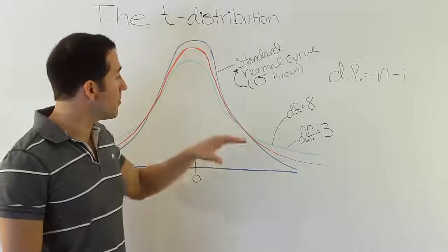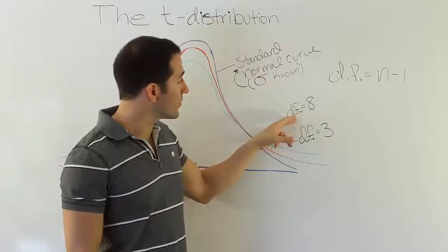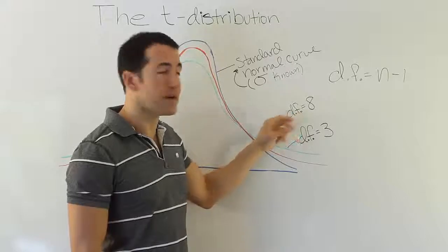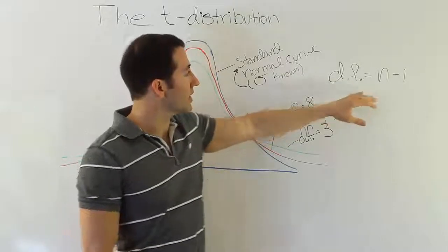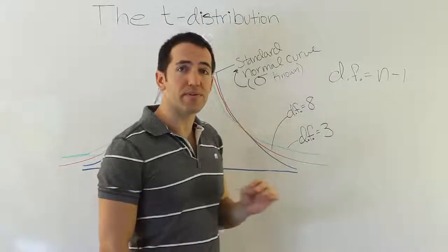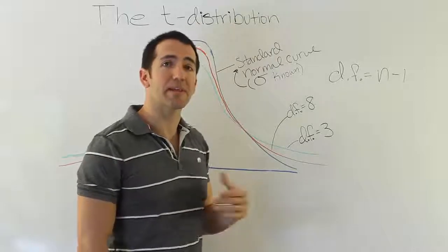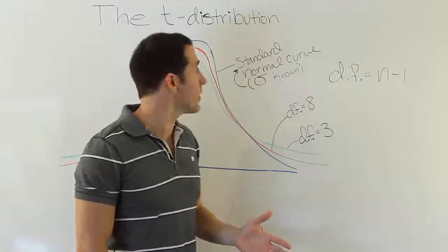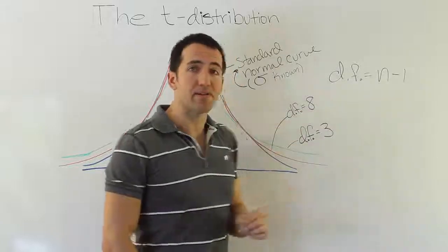So, the curve has something called the degrees of freedom, df for degrees of freedom. The degrees of freedom are defined as n minus 1 when you're dealing with a situation where you want to estimate the population mean for some variable. So, if that's the case, your degrees of freedom will be defined as n minus 1.